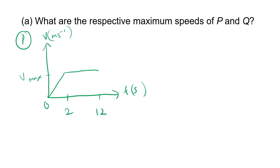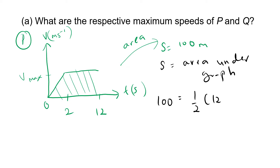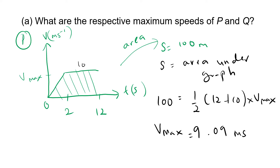The total displacement s is 100 meters. Since area under the graph gives displacement, we use s = area under graph. The shape is a trapezium, so: 100 = ½ × (12 + 10) × v-max, where 10 comes from 12 minus 2. Using a calculator, v-max for P = 9.09 ms⁻¹.